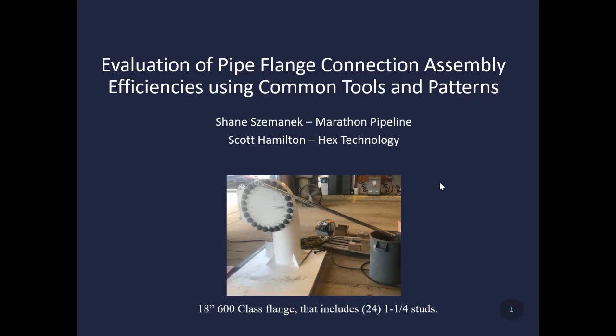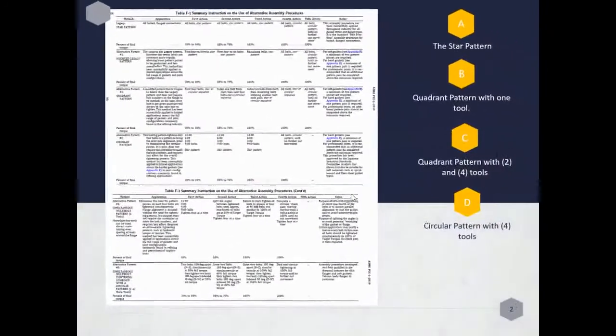We're looking at tightening flanges, not pre-tightening. So we did a paper: Evaluation of Pipe Flange Connection Assembly Efficiencies Using Common Tools and Patterns. We wanted to look at tools and patterns and see what the most efficient way to tighten up a flange. This is solely based on time for tightening. This is an 18-inch 600 class flange that includes 24 one and a quarter studs.